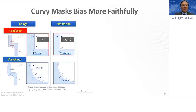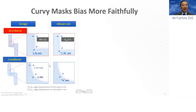Another thing we studied is mask bias. Our co-author Johan Choi did a study on how mask bias differs between the rectilinear and curvilinear worlds. On the top is the traditional rectilinear world — a simple Manhattan jog — compared to a curvilinear version from curvilinear ILT, to compare what happens when you apply bias to anticipate etching effects on the mask or wafer.